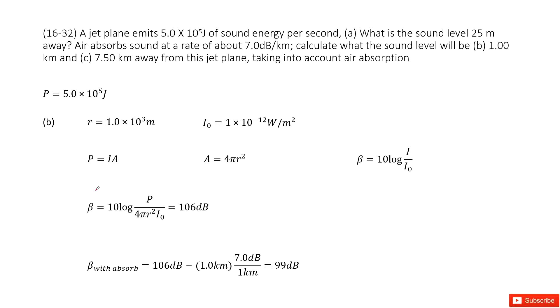We do the same thing as the previous one, just change r. We input P, r, and I₀ inside. We get the sound level without absorption. Then the absorption rate is 7 dB per kilometer.